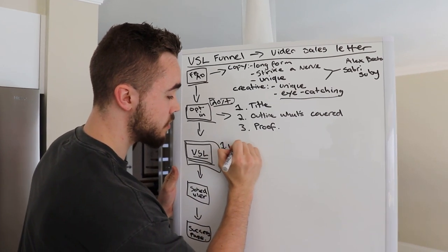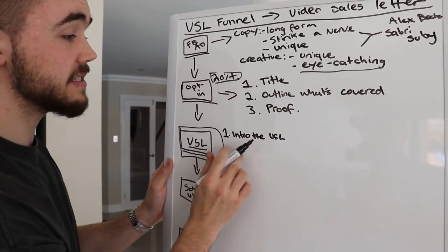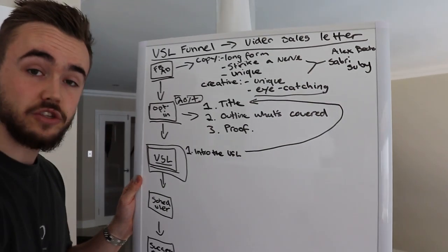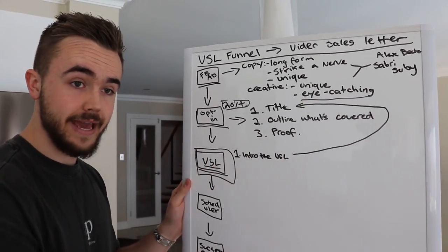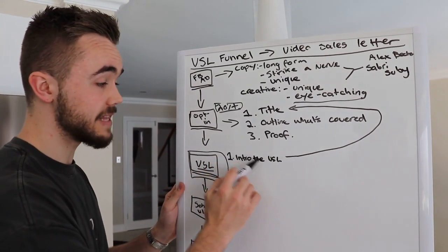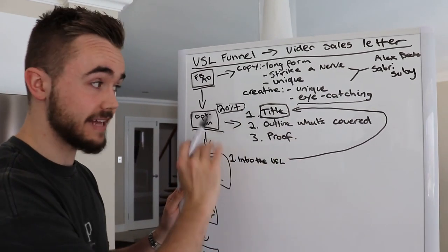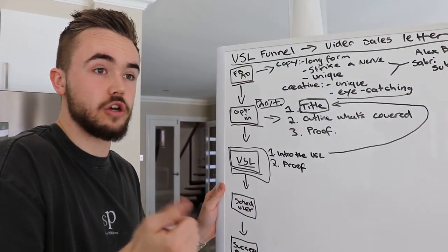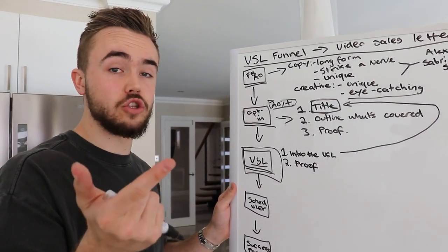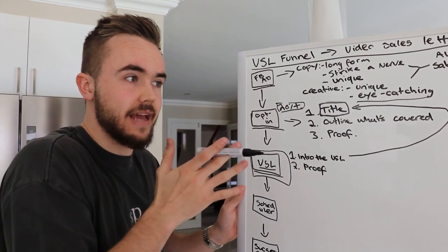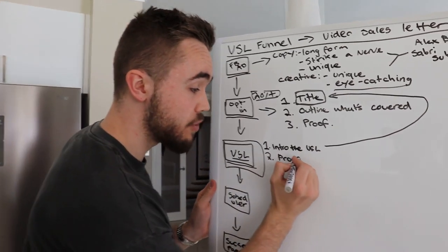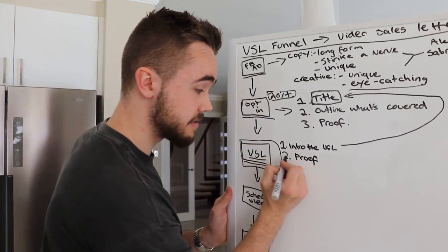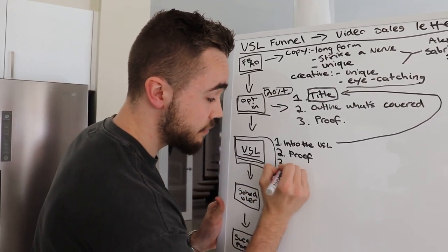The VSL structure starts with section one: intro the VSL. This is essentially reinstating the title and ensuring the viewer knows they're in the right spot — it's not now something completely different. Section two: show proof. Showing proof is the single most powerful thing, because it shows why they should be listening to you — it's hard, cold facts that actually work right now, not airy-fairy ideas. It ensures they feel they're in good hands and with an expert. The more proof you can show, the better.